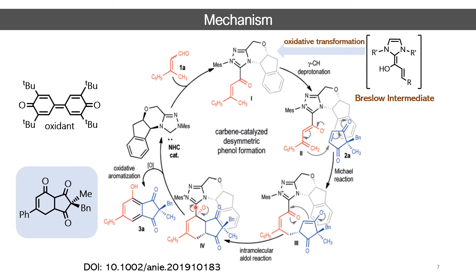This enolate then reacts with the carbonyl moiety through an intramolecular aldol-type reaction, constructing a six-membered ring. This six-membered ring has an anionic oxygen atom, which acts to remove the NHC group as a leaving group and regenerate the catalyst. Ultimately we get a ketonic compound, which under oxidative conditions undergoes aromatization to give the benzenoid structure.